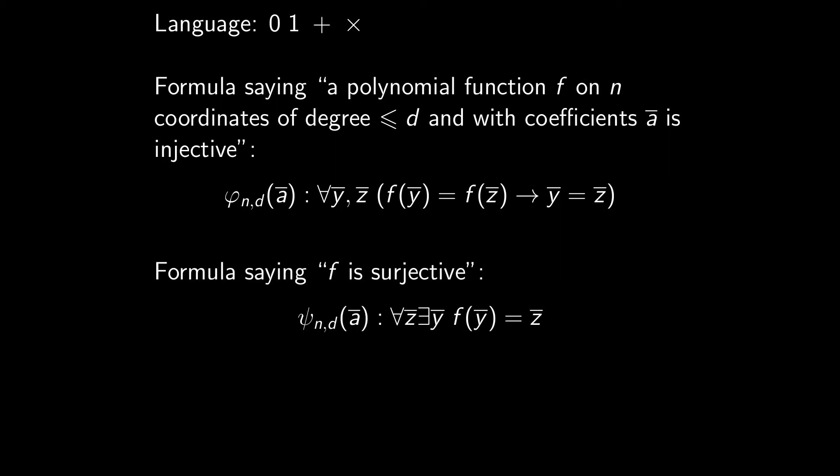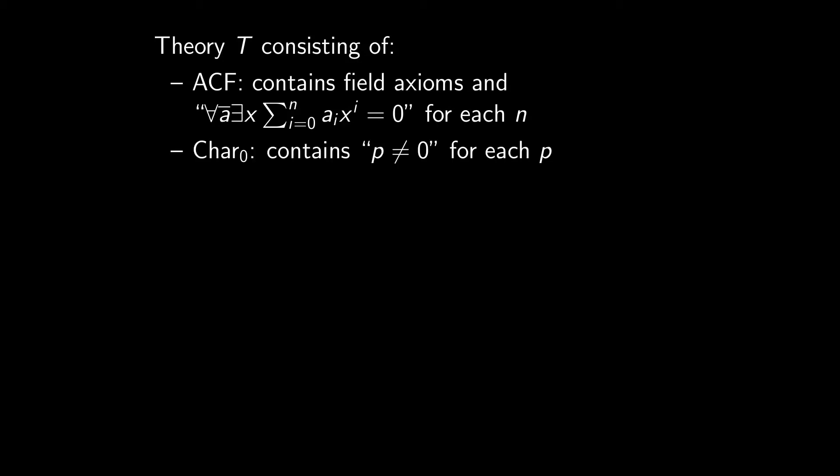Similarly, I can talk about surjectivity, with the same caveats as before. And finally, I can just write, injective implies surjective. I'll just name this formula delta_{n,d}. And note that delta has only quantified variables, so it's an axiom. And I can now write a theory T, consisting of ACF, which is the theory of algebraically closed fields. So it contains field axioms such as, for all x, x plus 0 equal x, etc, etc. And it also contains an axiom saying that any polynomial of degree n has a root. T also contains car 0. Car 0 says the field is of characteristic 0, like Q, R, or C. It means you never roll back. You never have p equal 0 for any p. That's what car 0 contains. And finally, T contains delta, which is just all deltas_{n,d} for all values of n and d. So T is saying that any polynomial function which is injective is also surjective.